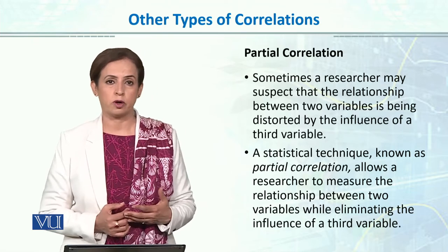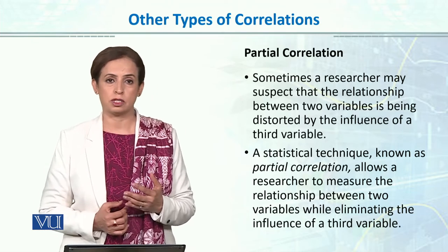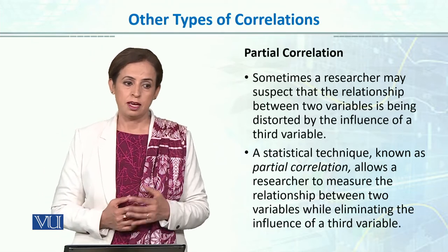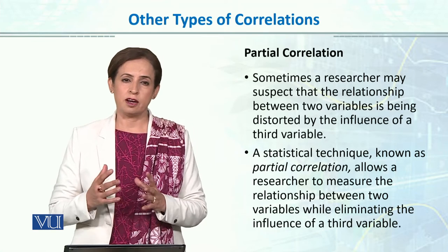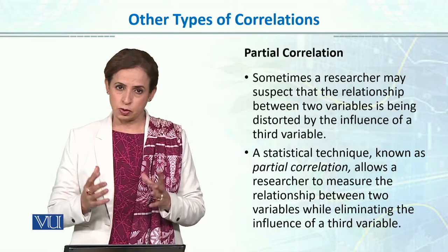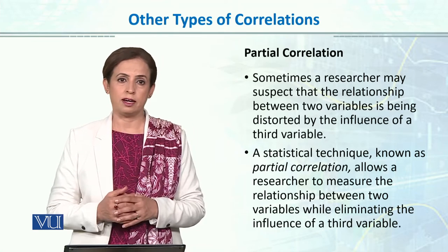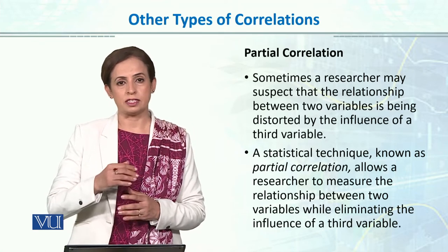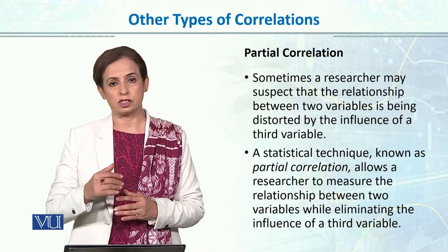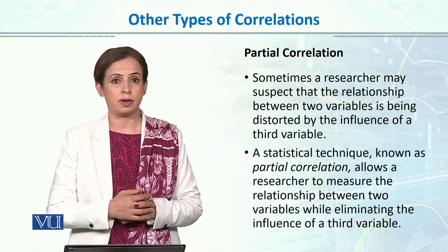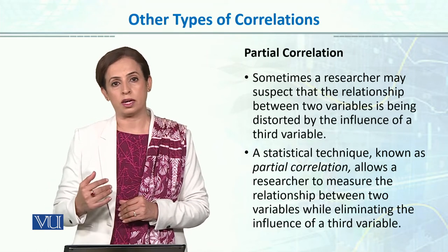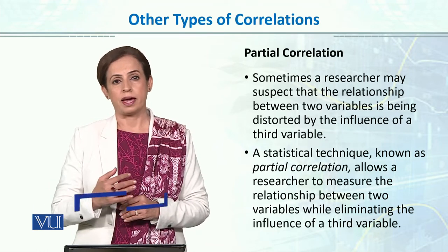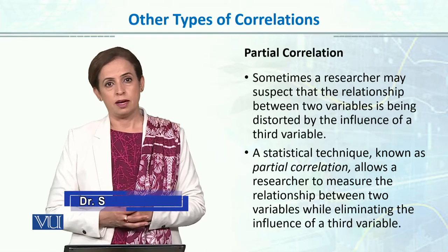The first one I'll talk about is partial correlation. There are many situations when we are trying to find the relationship between two variables, but that relationship is distorted by any other third variable.